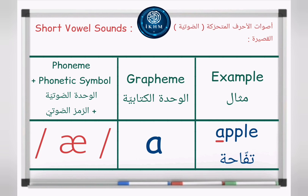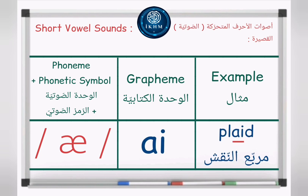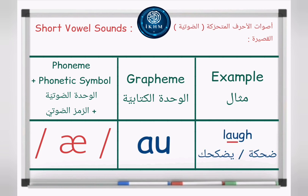Short vowel sounds. Phoneme plus phonetic symbol: /æ/. Grapheme: letter A. Example — apple, /æ/, apple. Grapheme: letters A-I. Example — plaid, /æ/, plaid. Grapheme: letters A-U. Example — laugh, /æ/, laugh.